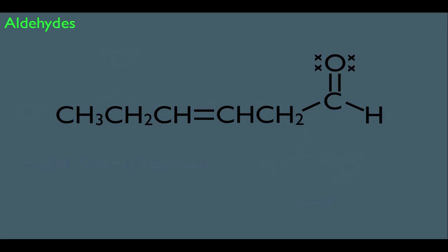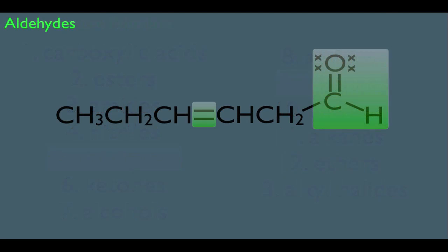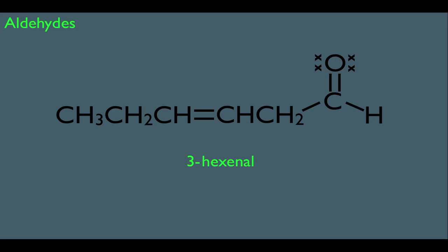What if you have an aldehyde and an alkene within the same molecule? Looking at our nomenclature priorities, aldehydes are number 5 and alkenes are number 9, so the aldehyde takes priority and we number the carbons accordingly. The parent name would be hexanal, but since it has an alkene functional group, we change the A to get hexenal. From alkene chemistry, we must denote where the double bond is — it starts at carbon 3. So the name of this molecule is 3-hexenal.